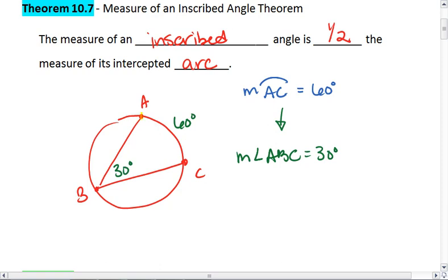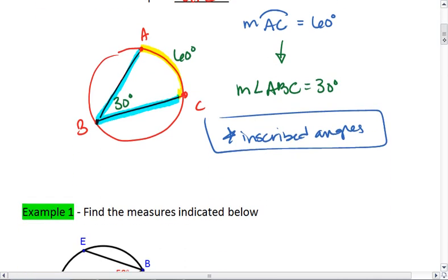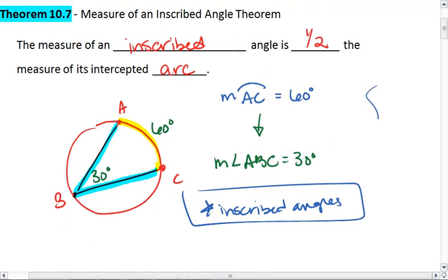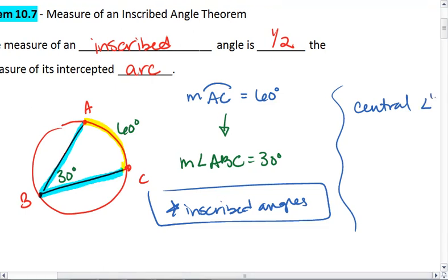So whatever our arc is, our angle is half that amount if and only if it's inscribed. This is for inscribed angles. So we've now talked about two angles. We've talked about inscribed angles, which are half the measure, and we've also talked about central angles. And central angles are equal.